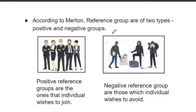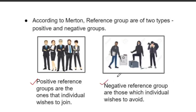Merton has two types of reference groups. First is the positive reference group, which means a group that one wishes to join. The negative reference group means a group that we avoid — for example, thieves or robbers. We don't want to join this group, so that is our negative reference group, and the group we aspire to join is our positive reference group.